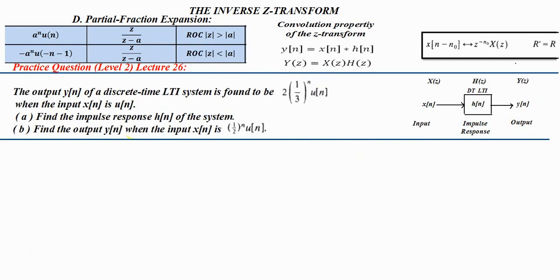Here is a practice question based on this concept. The output y(n) of a discrete time LTI system is given as 2·(1/3)^n·u(n) with input x(n) equals u(n). Find the impulse response h(n) of the system, and find the output y(n) when the input x(n) is (1/2)^n·u(n).